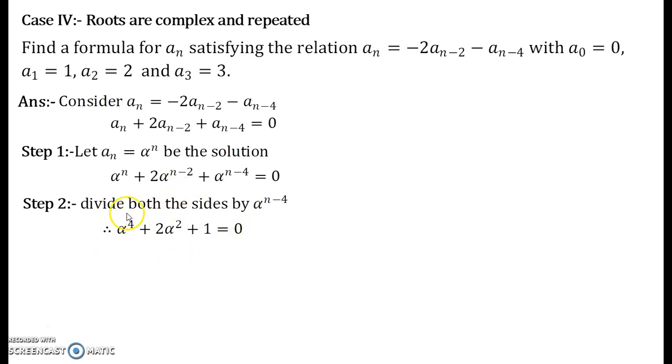Now this fourth-degree equation can be simplified and written as (α^2 + 1)^2 = 0. You might have already solved such equations at your high school or school level. So I am not entering into the details of it.